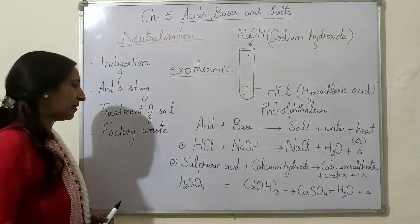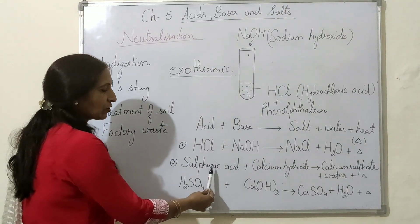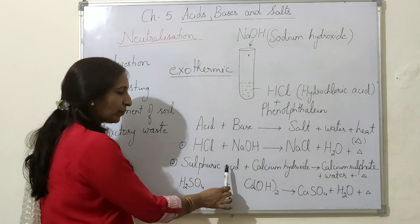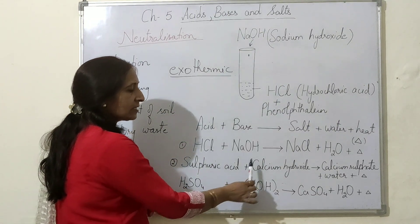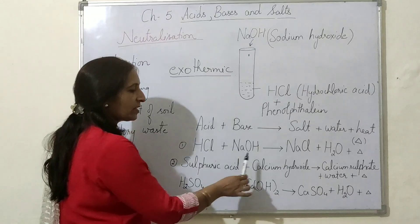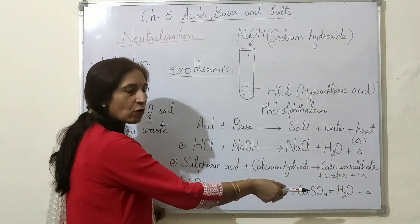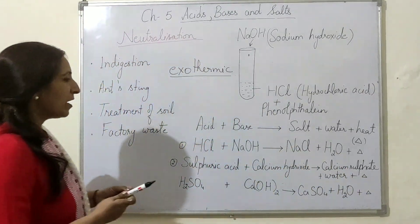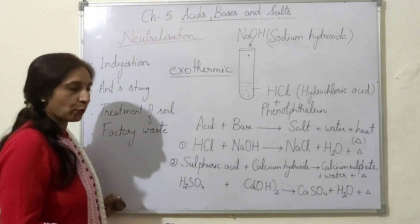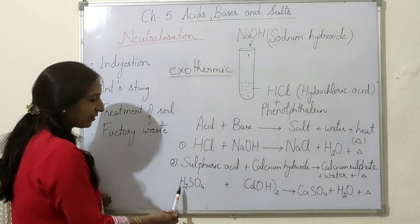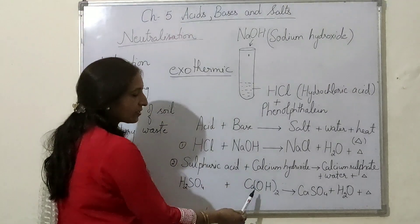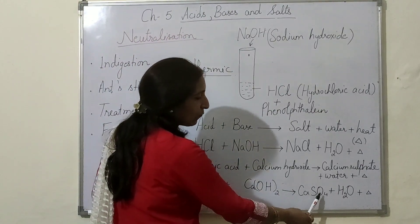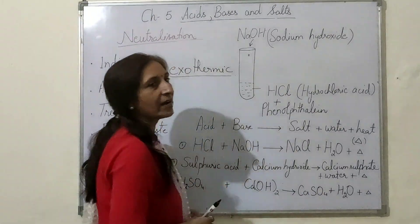Let me give another example — first the word equation, then the chemical equation. Sulfuric acid plus calcium hydroxide — acid plus base — gives calcium sulfate (salt) plus water plus heat. The chemical equation: H₂SO₄ plus Ca(OH)₂ gives CaSO₄ (calcium sulfate) plus H₂O and heat is produced.